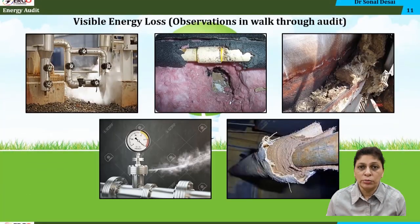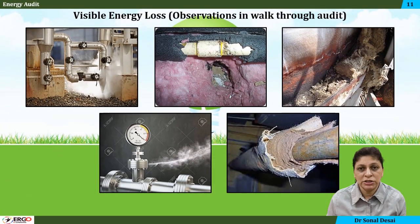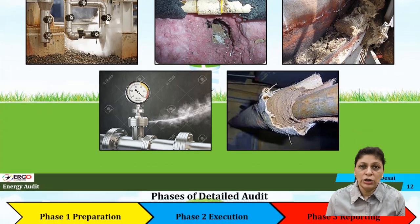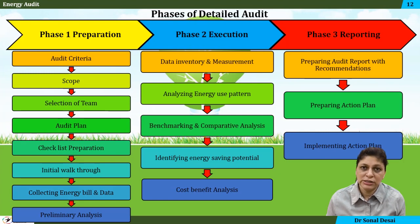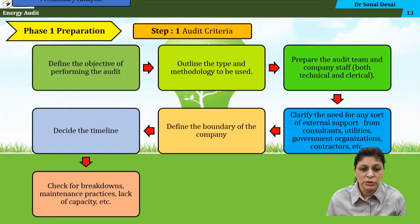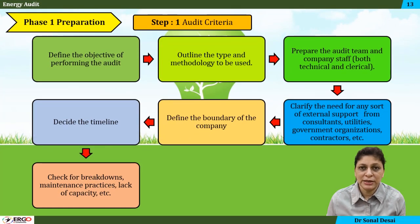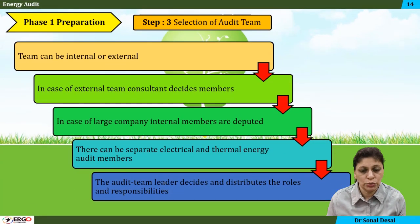Some observations are discussed about what steps need to be taken when certain types of leakages are found. The detailed audit process is made of three major steps: preparation, execution, and data reporting. These individual steps are discussed across three to four videos of the total video series.